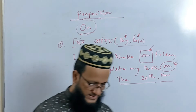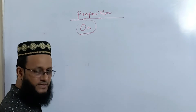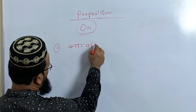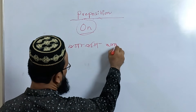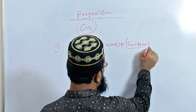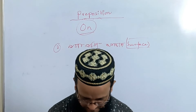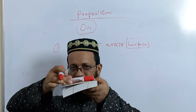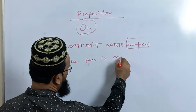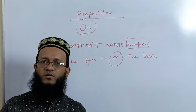Here we have a small and interesting use of the ON preposition. The second use is connecting with a surface level — ON means the surface level is above. For example: the pen is on the book. The book is on the table. When something is resting on a surface, we use ON.